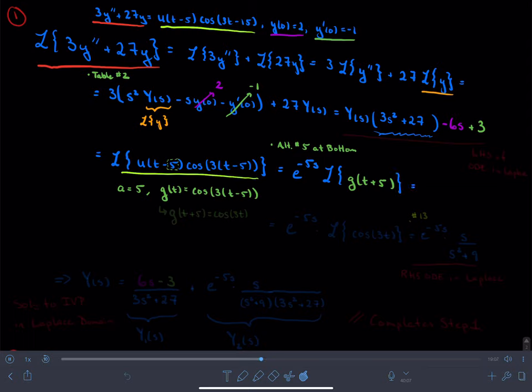So what is this equal to? This is equal to e to the negative 5 s times the Laplace transform of g of t plus 5.